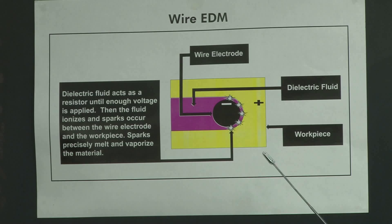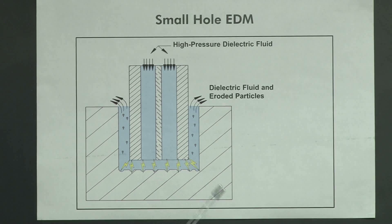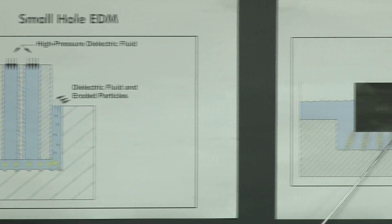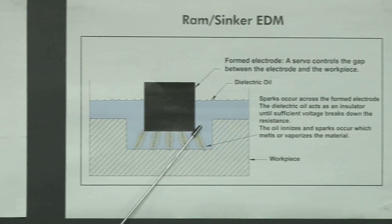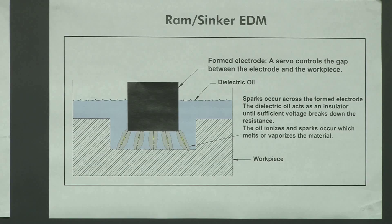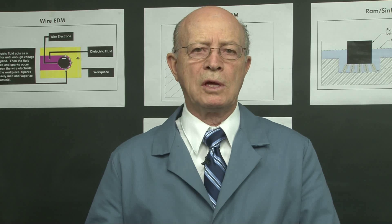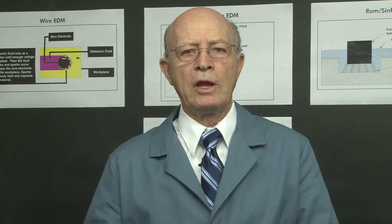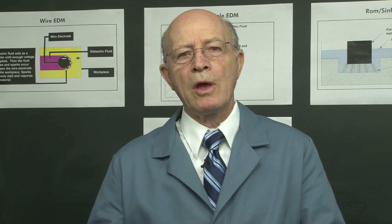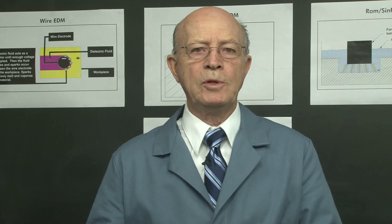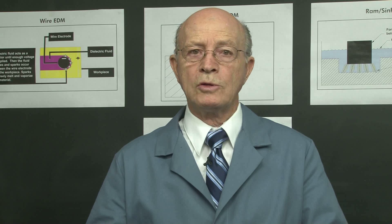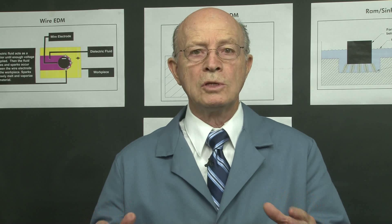The first one is wire EDM, the second one is small hole EDM, and the third one is ram or sinker EDM. For more details of these individual processes, watch the other training videos. Remember any electrically conductive material may be EDM'd, whether soft aluminum or tungsten carbide.